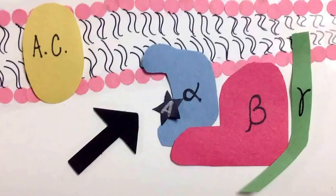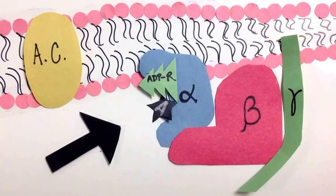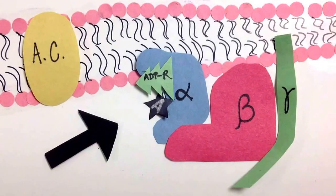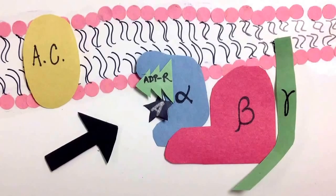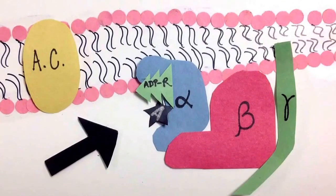The A portion of the toxin forms a complex with ADP ribosylation factors, which catalyzes the ADP ribosylation of G-alpha-S, which is a component of the G protein.